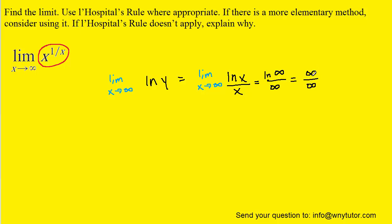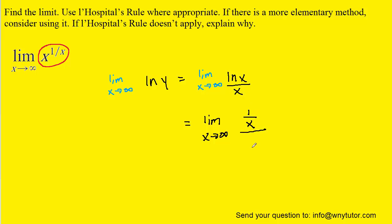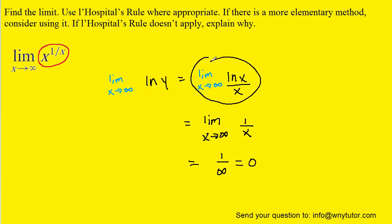This is a special indeterminate form. Whenever we have infinity over infinity, we're allowed to use L'Hôpital's rule, and that rule allows us to rewrite the limit on the right-hand side. According to L'Hôpital's rule, we take the derivative of the numerator as well as the derivative of the denominator. The derivative of the numerator is 1/x, and the derivative of the denominator is 1, so we have 1/x over 1, which is just 1/x. Now letting x approach infinity, we have 1 divided by infinity, which equals 0. So this limit equals 0.